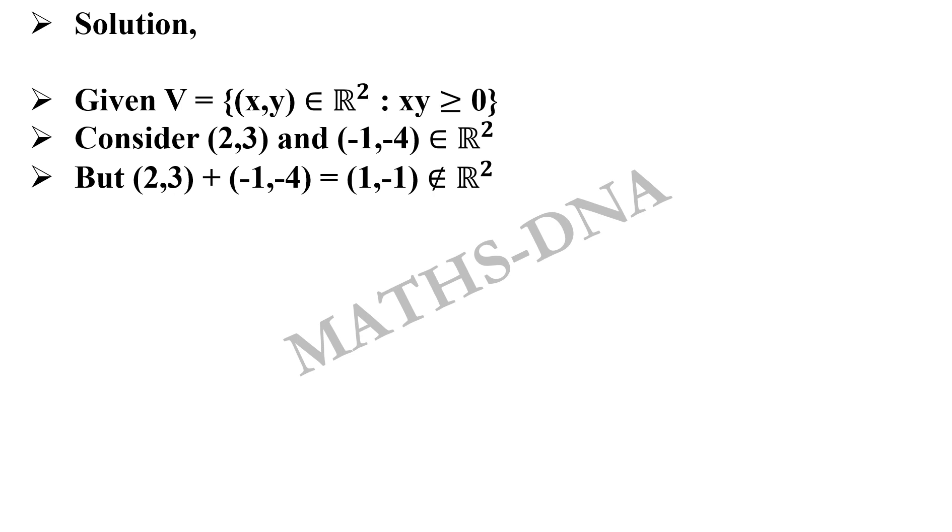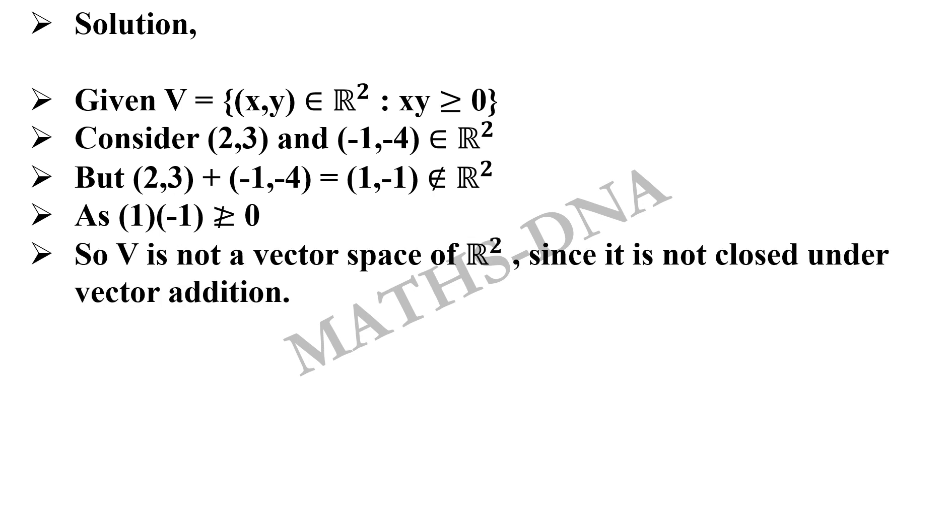Now, adding both of them will give us (1,-1) which does not belong to ℝ² and hence, because 1×(-1) is not greater than equal to 0. And hence V is not a vector space since it is not closed under vector addition.